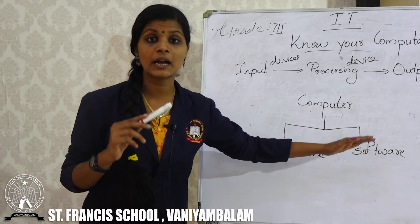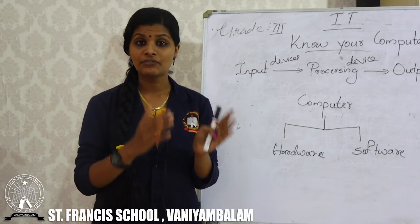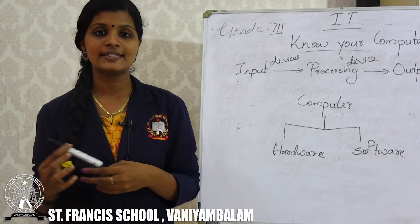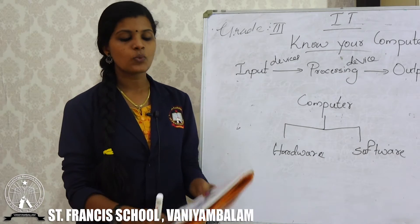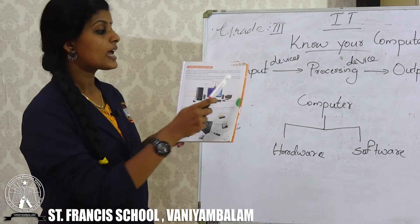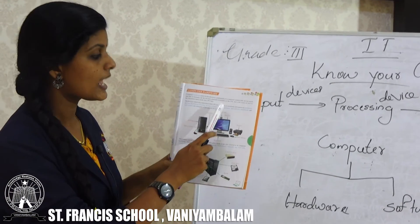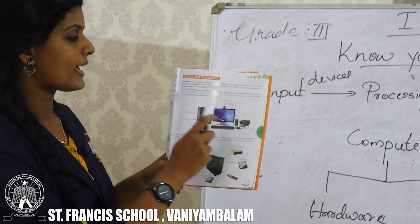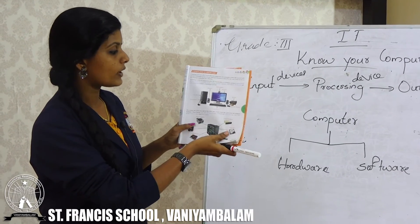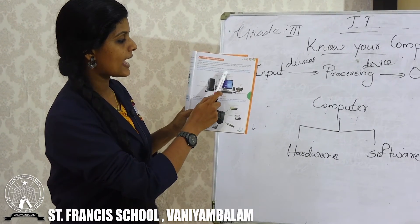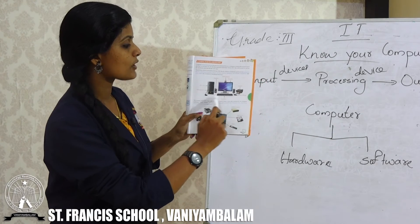Hardware and software combine to make a computer work more efficiently. These devices are also known as peripheral devices. Peripheral devices include keyboard, monitor, mouse, printer, scanner, speakers, microphone, headphone and web camera. These are all examples of peripheral devices — that means these are the hardware devices.